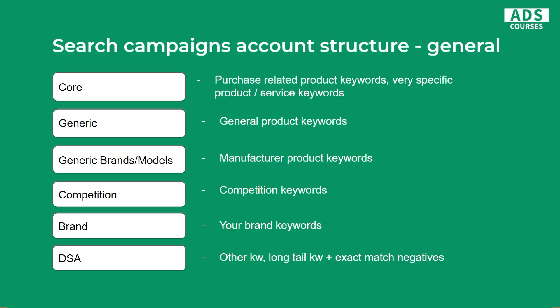The next example shows a good basic account structure — this is simplified, but in real life you can have more campaigns depending on your niche and business. In general, you would have a core campaign with purchase-related keywords — very specific product or service keywords. Then a generic keywords campaign for broader product or service keywords. Another campaign for generic brand or model keywords, such as manufacturer product keywords like 'Nike running shoes.' Next would be a competition keywords campaign, if you don't mind running one. And of course a brand campaign for your own brand keywords, plus DSA campaigns for any other or long-tail keywords, where you place exact match negatives from your other campaigns.